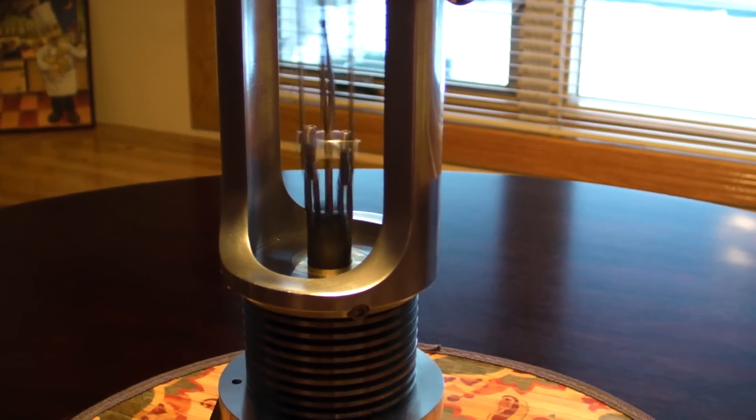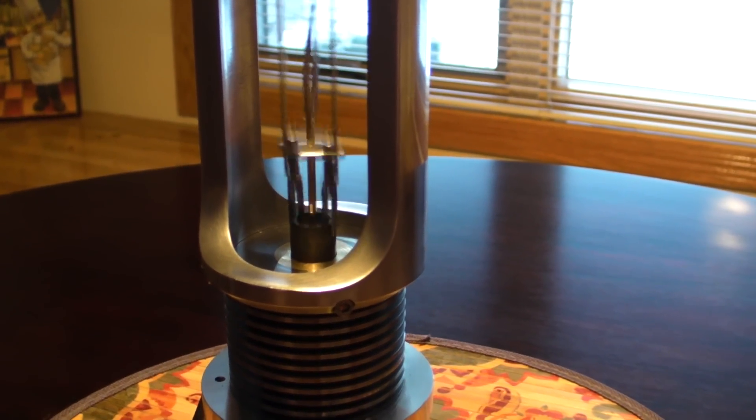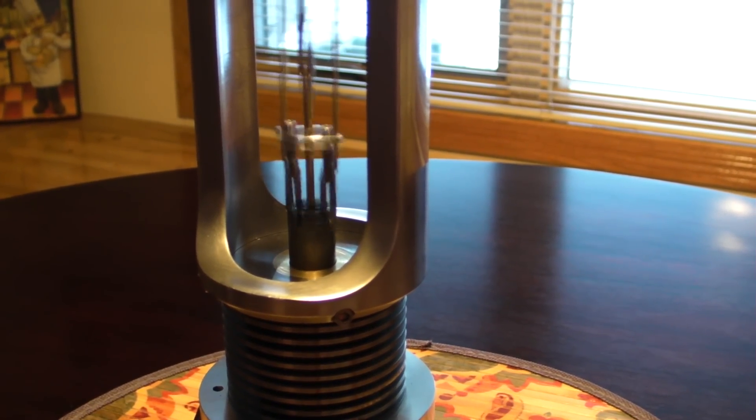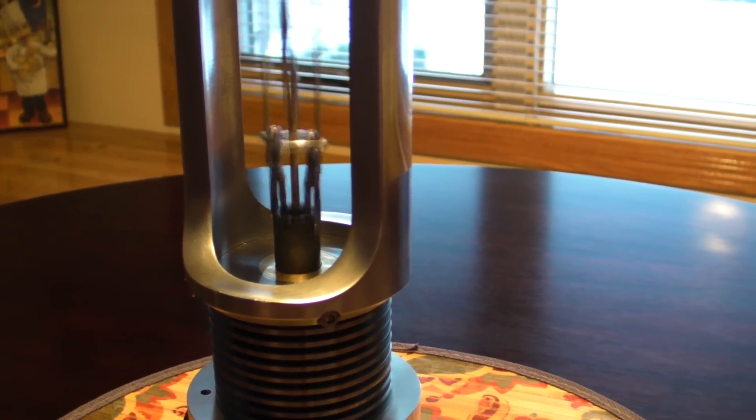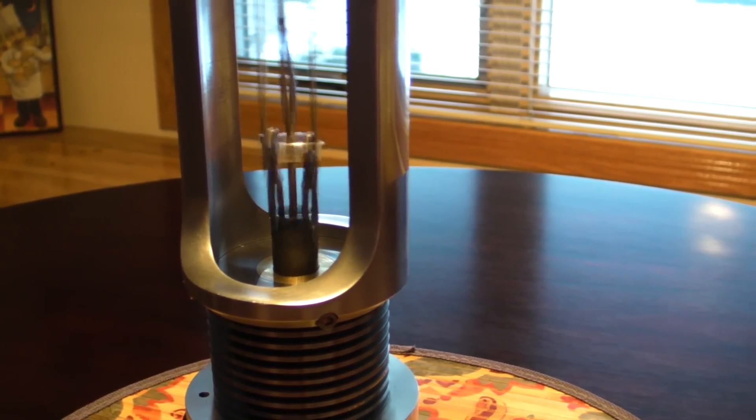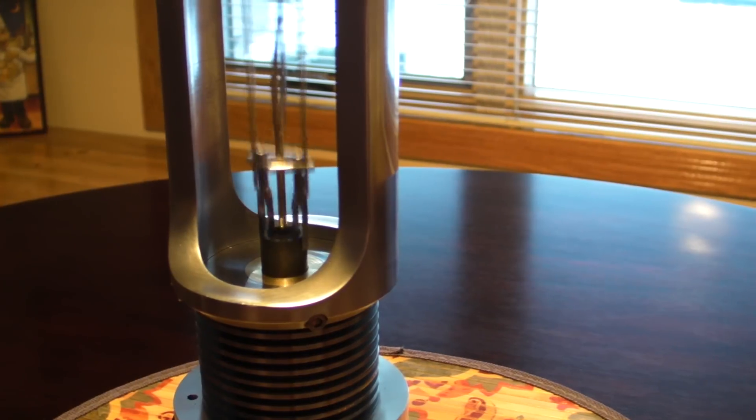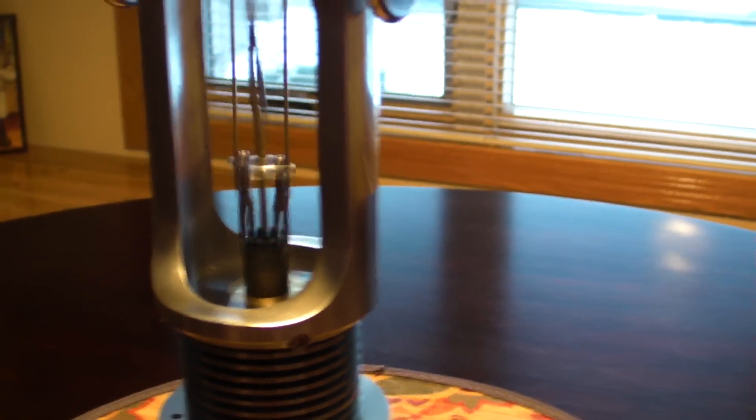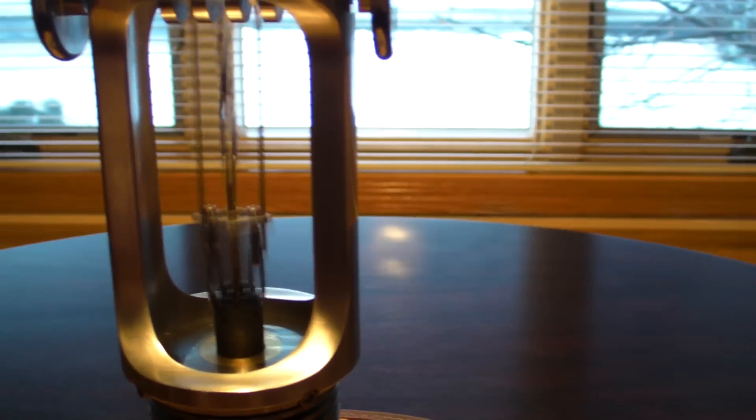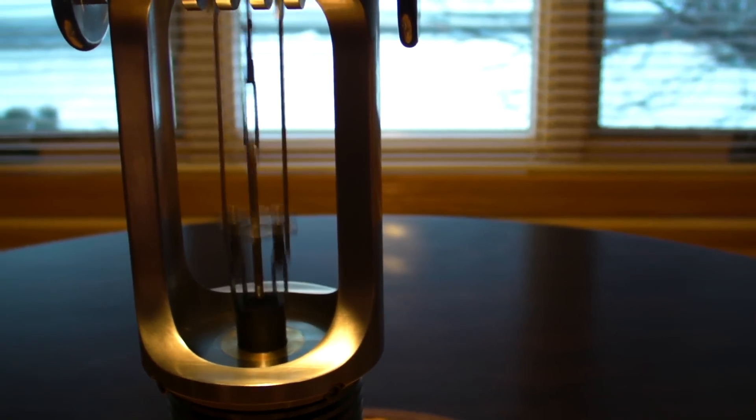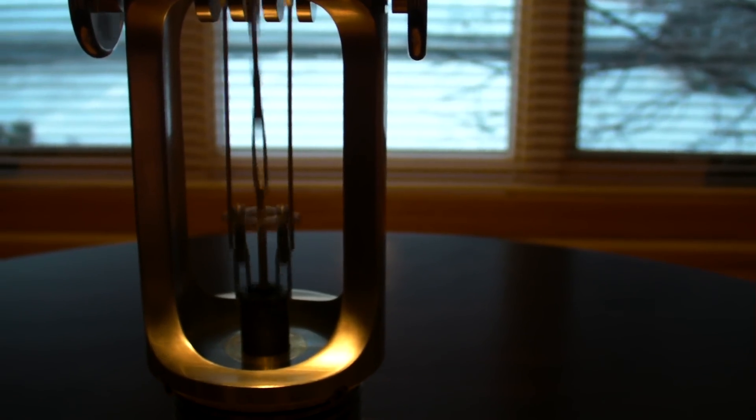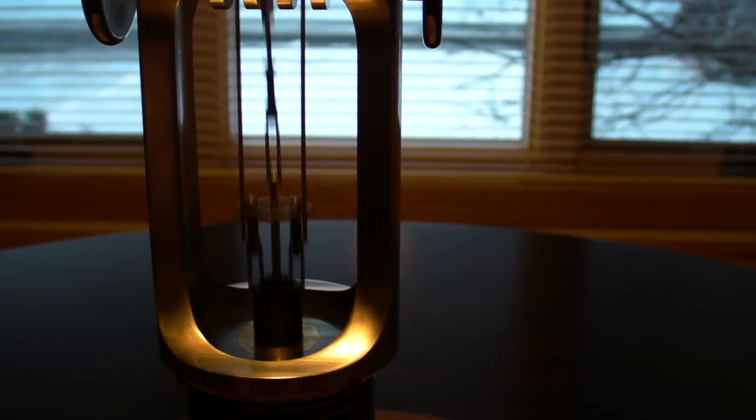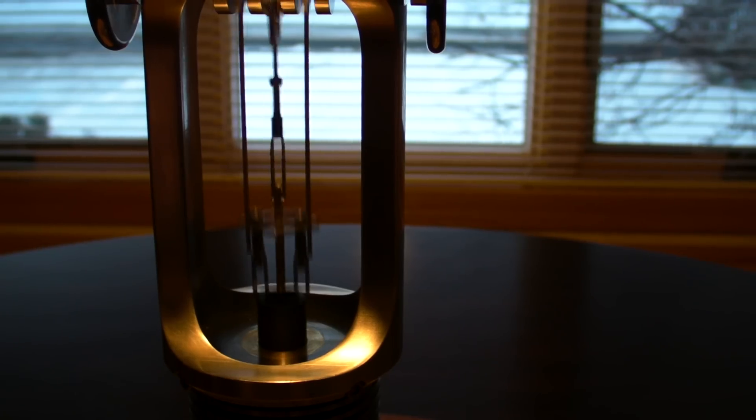I have that bar that goes across the two linkages for the power piston to help stabilize the two linkages because they both got to work in the same stroke. Keeps them nice and straight and aligned with the crankshaft.